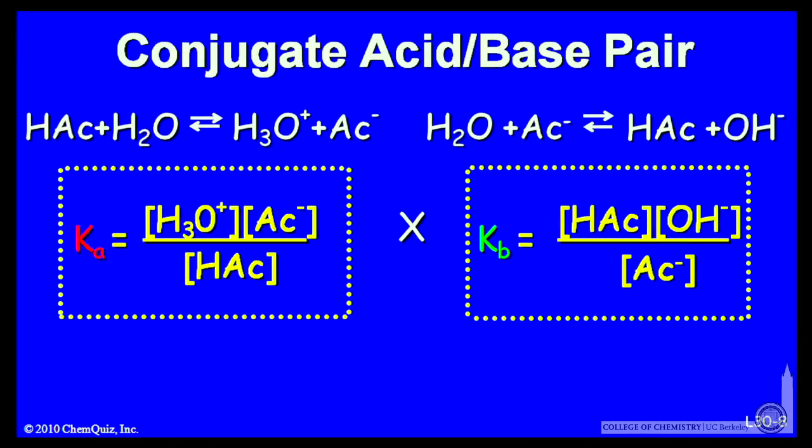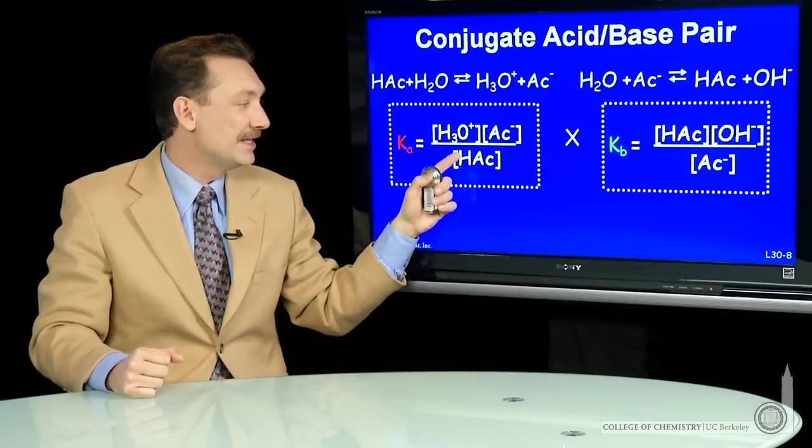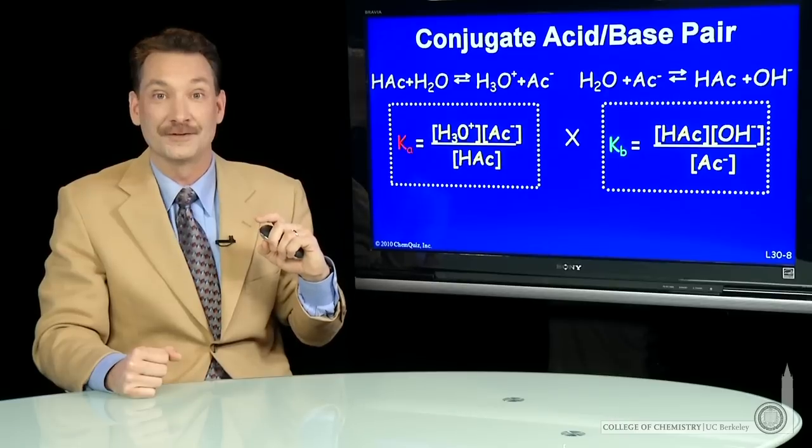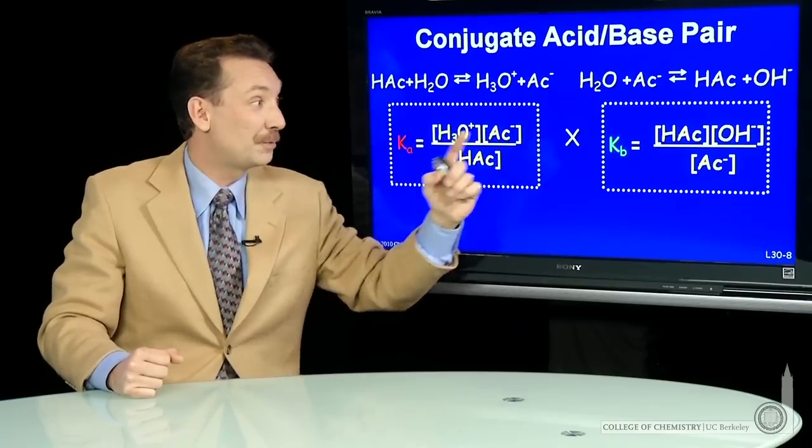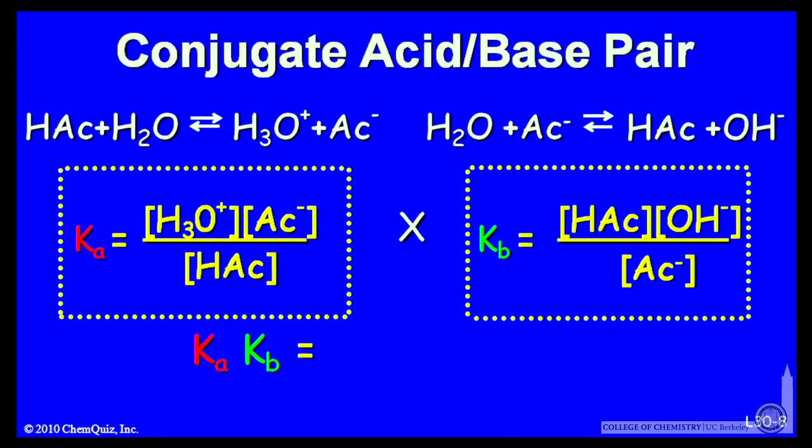if you multiply Ka times KB, so H3O plus AC minus over HAc times HAc OH minus over AC minus, you'll see the AC minus ion concentration cancels. And the HAc, the acetic acid concentration, cancels. What you're left with is H3O plus times OH minus. So Ka times KB is H3O plus times OH minus.